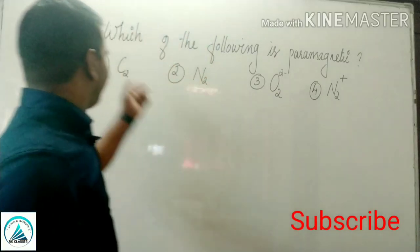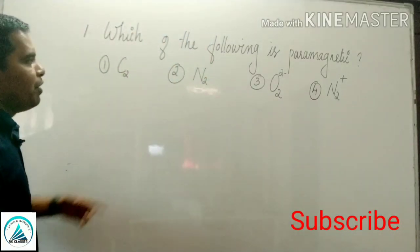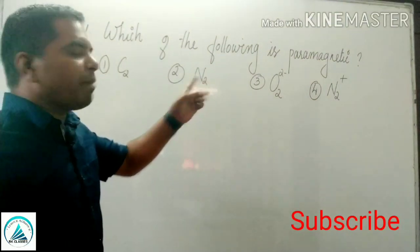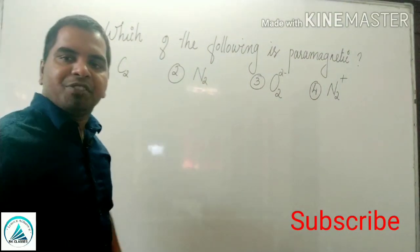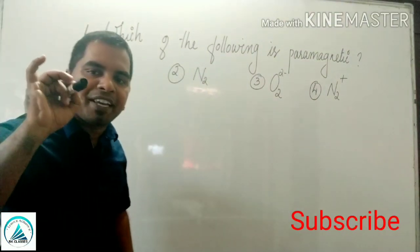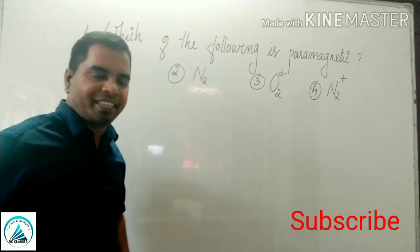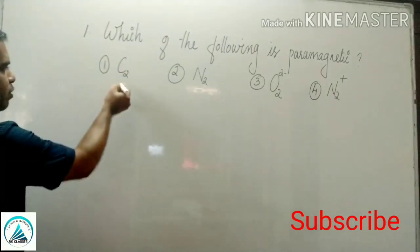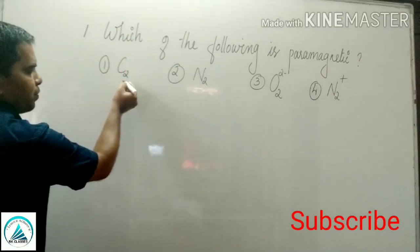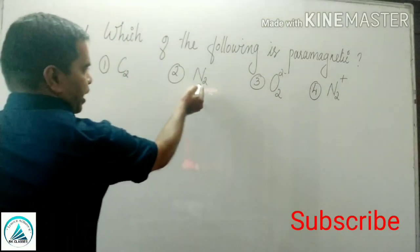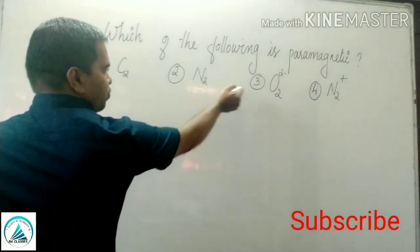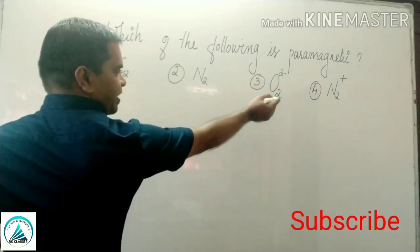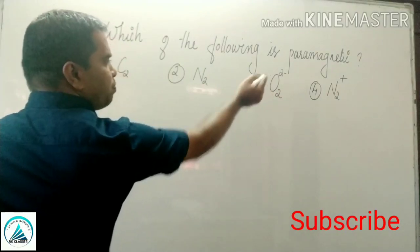Our first question: which of the following molecules is paramagnetic? First option is C2, second option N2, third option O2 2 minus, and N2 plus.